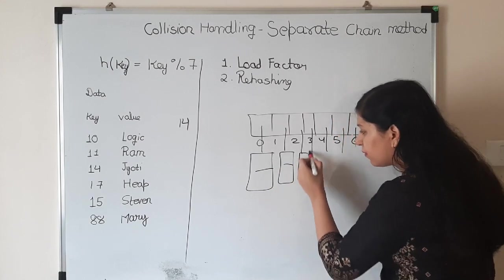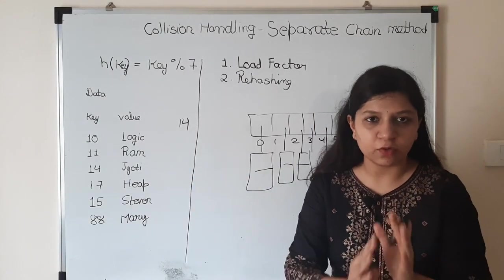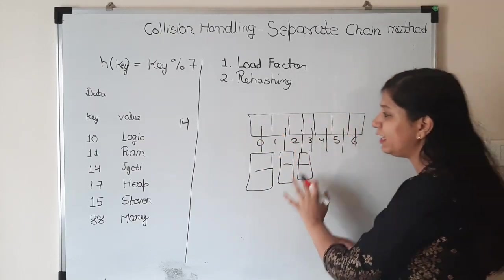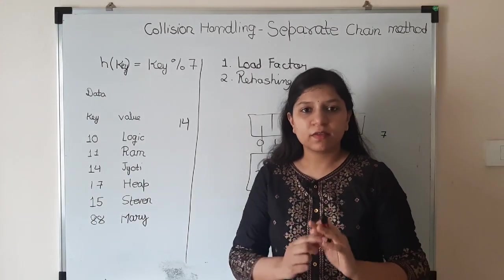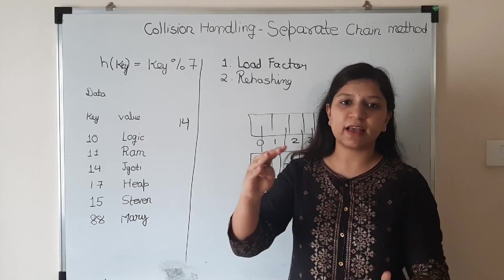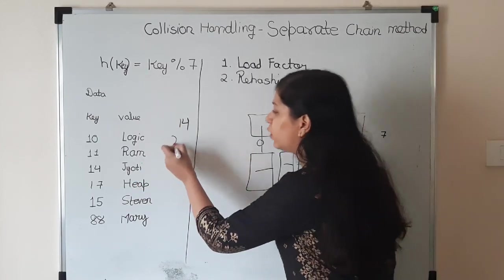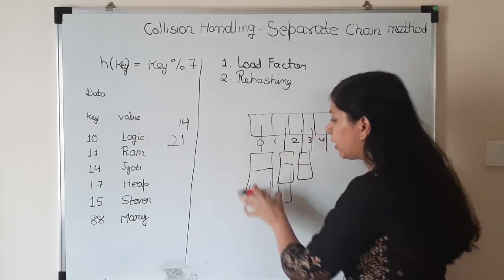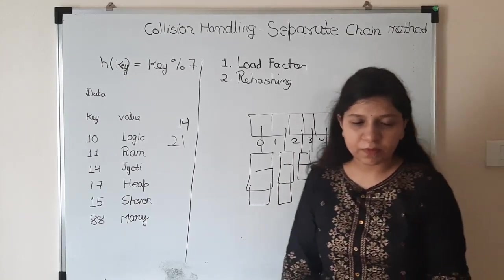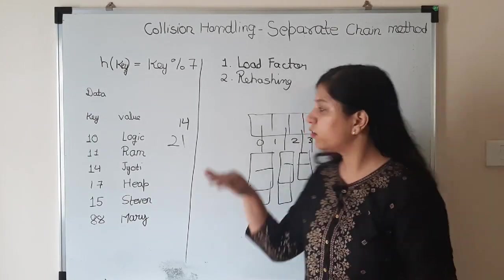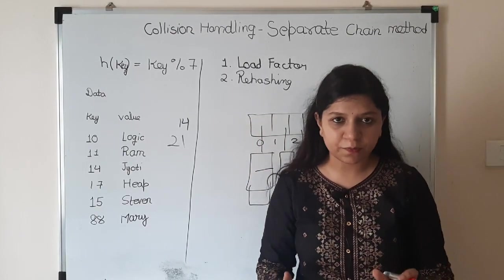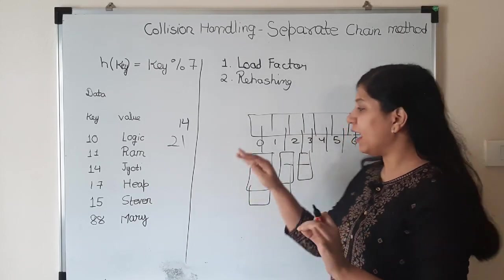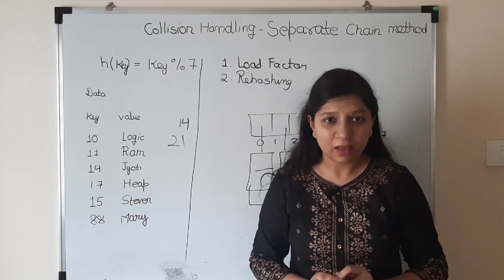If it distributes uniformly with 14 key value pairs and seven possible places, at each place around two values will be there. If we increase the input size more, the bucket size will increase. If we make it 21, there will be three. The concept here is load at each bucket should not be much.